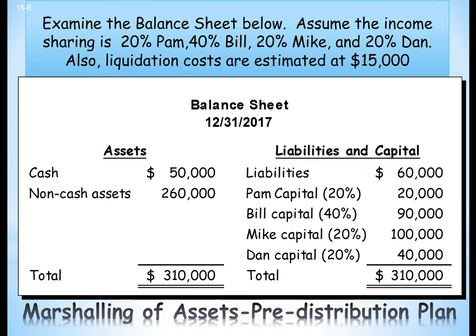In our example, we have profit sharing with Pam, Bill, and Mike. It shows their profit sharing of 20-40-20-20. We have $50,000 in cash and $260,000 in non-cash assets. Now what we're going to do is a marshalling of assets.